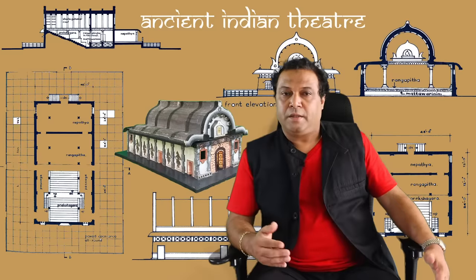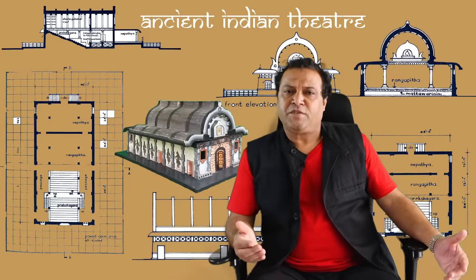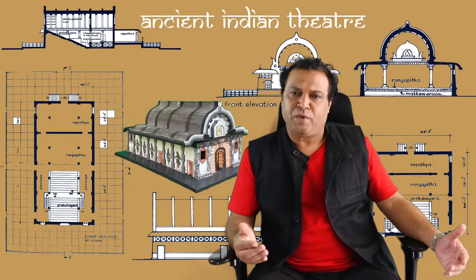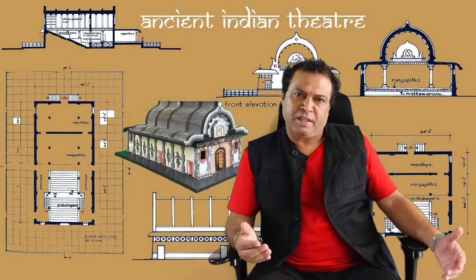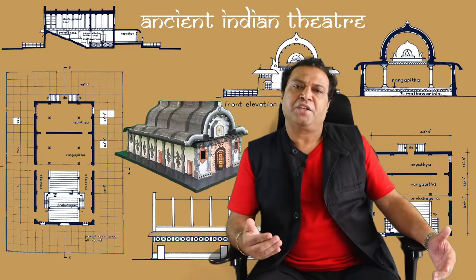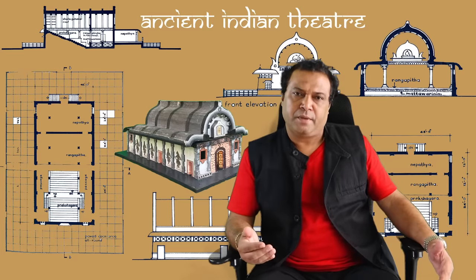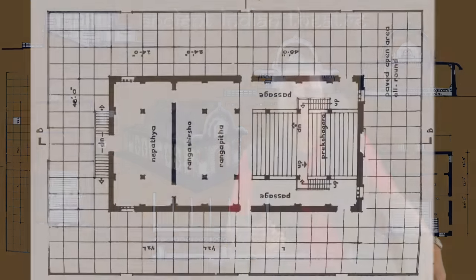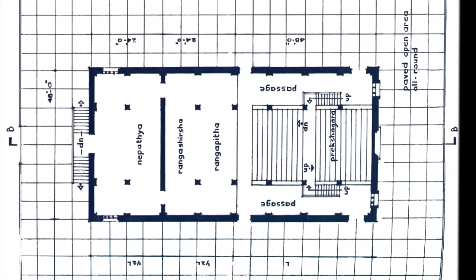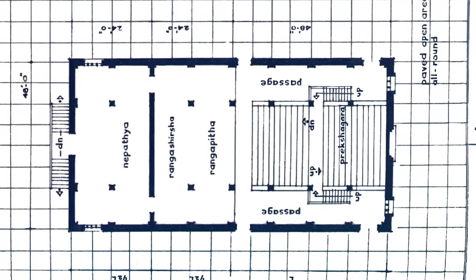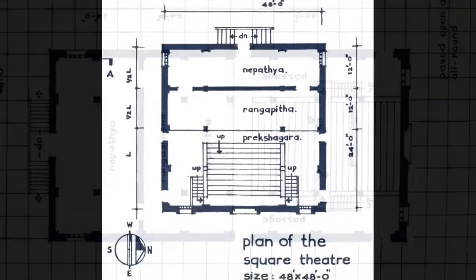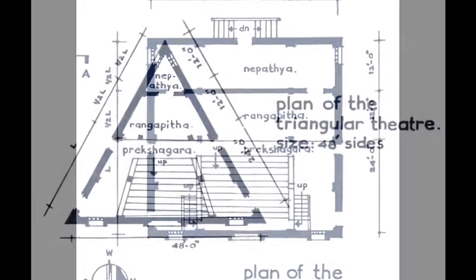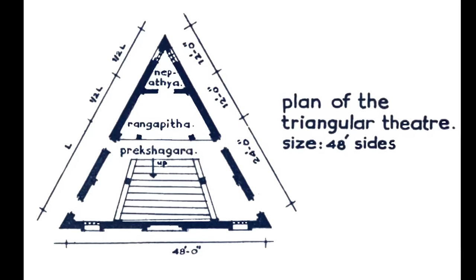There are three types of Sanskrit theatre devised by Vishwakarma, the celestial architect. They are Vikrushta, rectangular; Chaturashra, square; and Tishra, triangular.